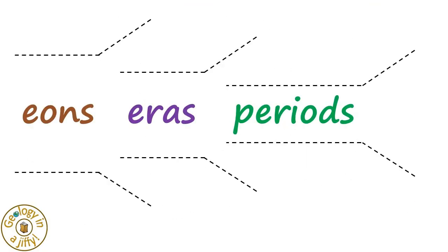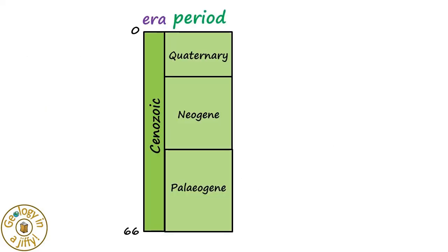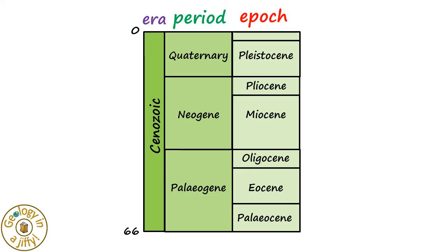Periods are more finely subdivided into epochs, as scientists have managed to do with the three periods of the Cenozoic era, dividing them into seven epochs: the Paleocene, the Eocene, the Oligocene, the Miocene, the Pliocene, the Pleistocene, and the most recent Holocene.